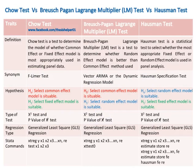The Chow test is a test to determine the model of whether the common effect or fixed effect model is most appropriately used in estimating panel data. The Breusch-Pagan Lagrange Multiplier (LM) test is a test to determine whether the random effect model is better than the common effect method. The Hausman test is a statistical test to select whether the most appropriate fixed effect or random effect model is used in panel analysis.